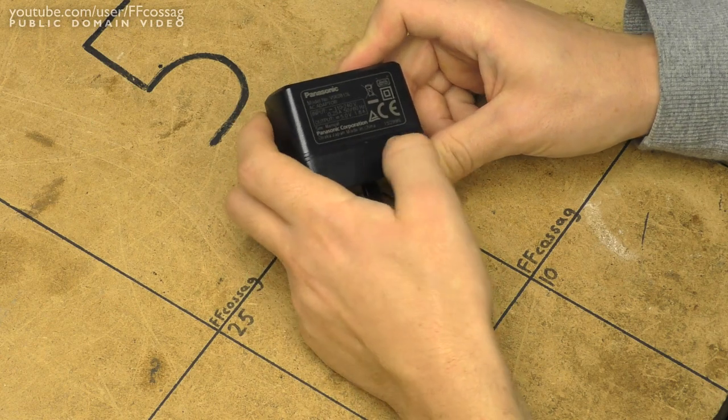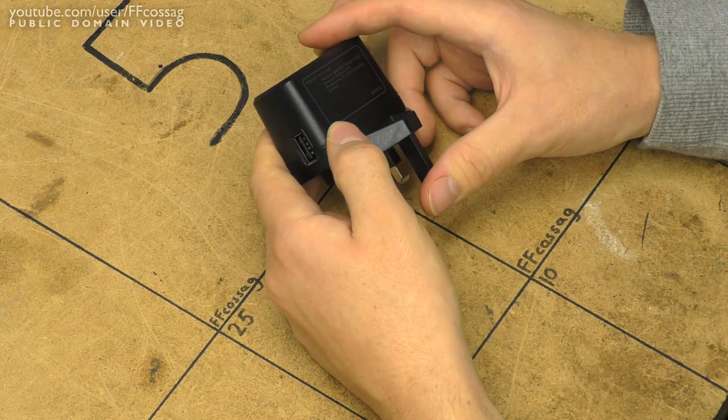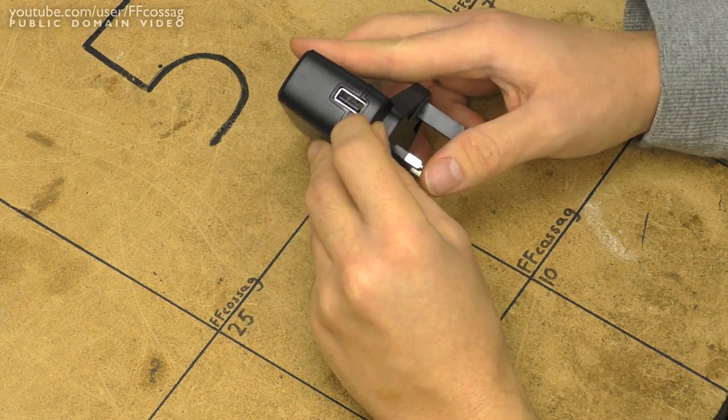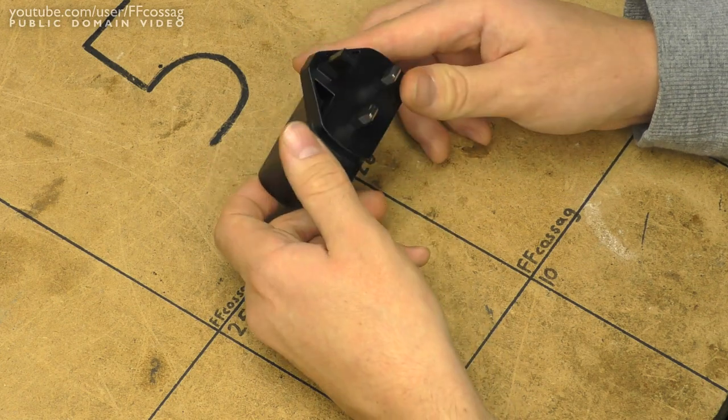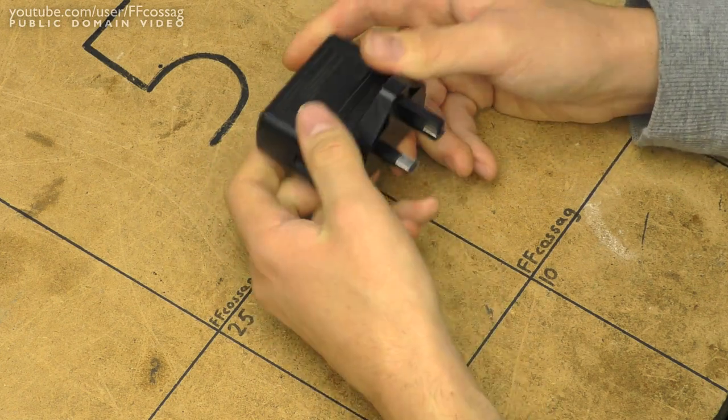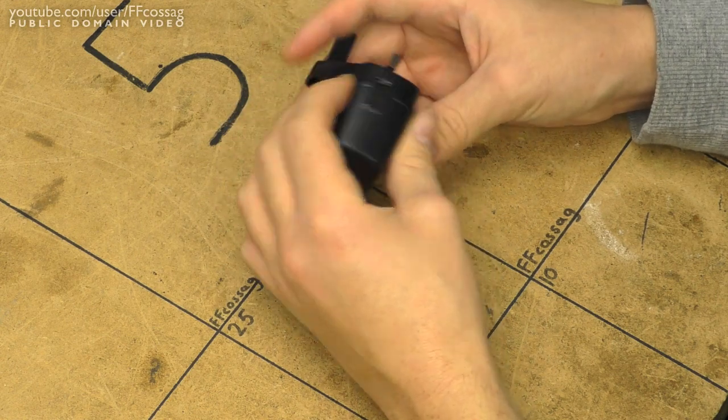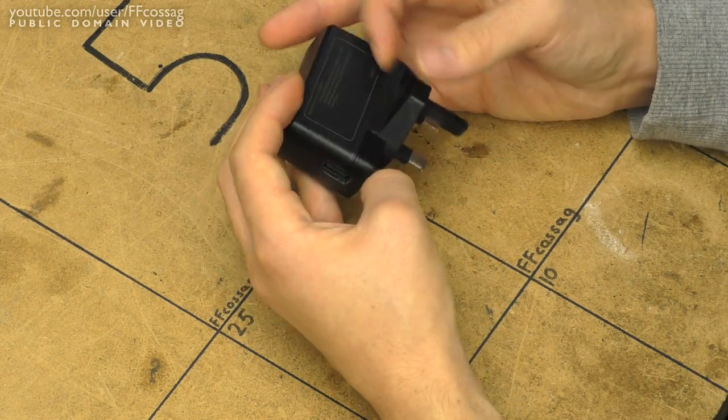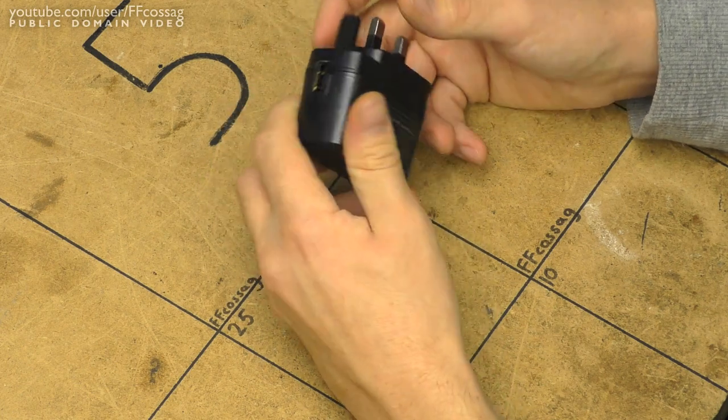It is ultrasonically welded, so getting inside is going to be a bit of an issue. Exterior signs do hint at some kind of build quality. We have a gold plated USB connector, and it feels generally like a sturdy device, very lightweight, but you pretty much expect that of a modern switch mode power supply. Let's bring out the chisel and hammer and get inside.